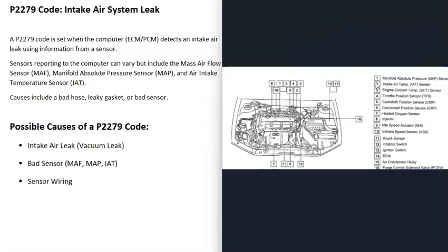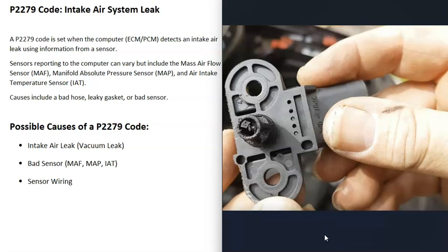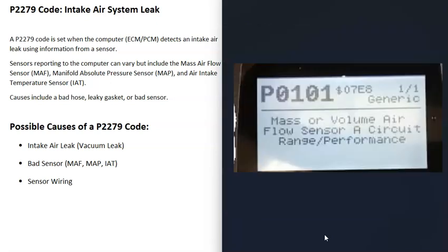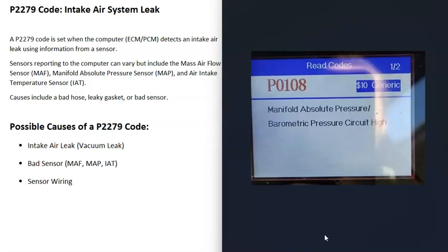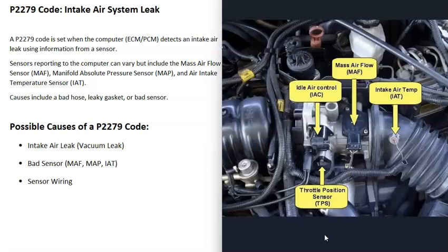It's a good idea to get a diagram of all the sensors on your engine, since configurations vary. Once you know which sensors the engine uses — such as the MAF, MAP, or IAT — you can test them. Usually if a sensor has a problem, you'll get an additional code. For example, a P0101 (mass air flow sensor circuit range/performance) would point you to the MAF sensor, and a P0108 would point you to the MAP sensor. Always pay attention to any other codes present, as they can help identify the problem.